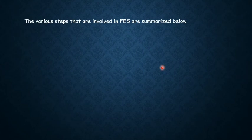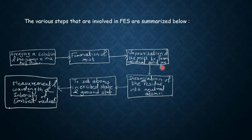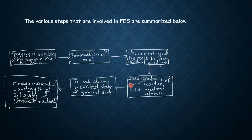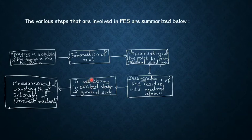The various steps involved in FES: First, spraying a solution of the sample into a hot flame. The sample solution gets vaporized, forming a mist. Then vaporization of the mist forms residual solid particles. After that, dissociation of the residue occurs to form neutral atoms. These neutral atoms are in the ground state, and some get excited. Finally, the atoms in the excited state emit radiation when returning to ground state, and the wavelength and intensity of the emitted radiation are measured.